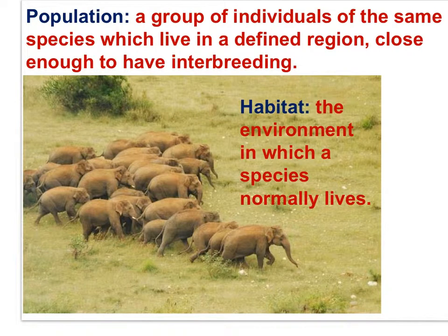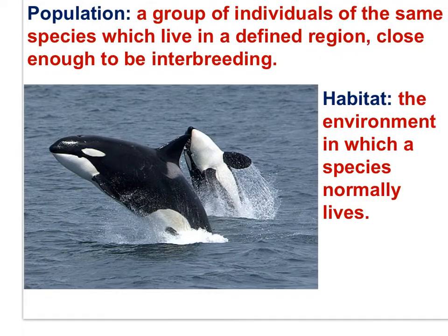Here is a population of elephants. A population is a group of individuals of the same species which live in a defined region, close enough to have interbreeding. In this photograph, we can see African elephants, Loxodonta africana, living in a defined area — their savanna habitat of eastern Africa. Here is a population of killer whales, or Orcinus orca, in the open ocean biome. Again, a population of orca whales as a group of individuals of the same species which live in a defined region, close enough to be interbreeding.